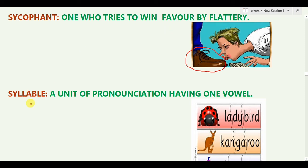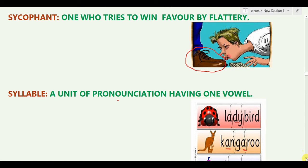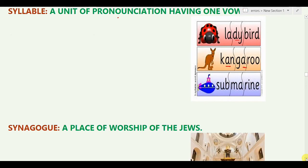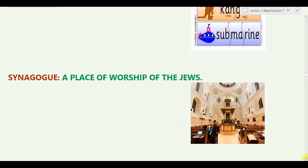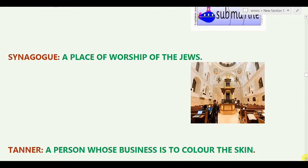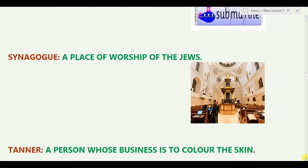The next word is 'Syllable,' which is a unit of pronunciation having one vowel sound. For example, in 'lady' — la has one vowel, dy has one vowel. When we pronounce one vowel unit, that is a syllable. These words are very important from an exam point of view — for CAT, MAT, JET, CGL, KBS, and any other important exams related to teaching and English.